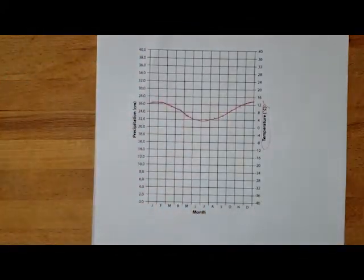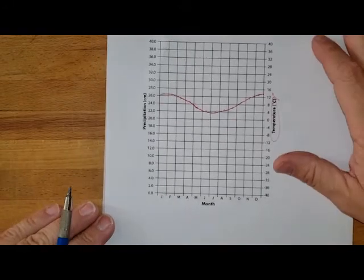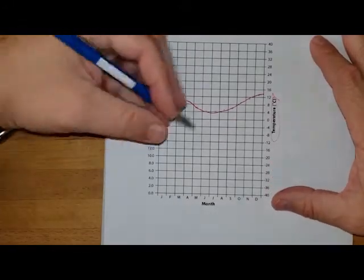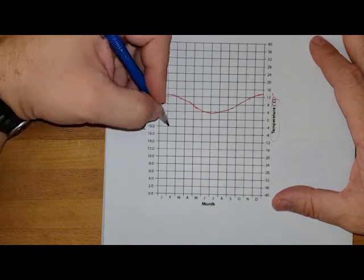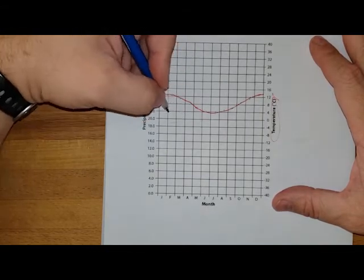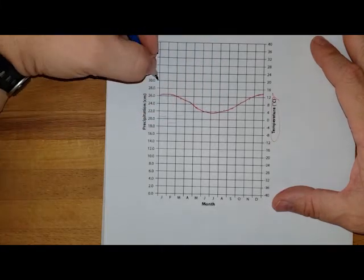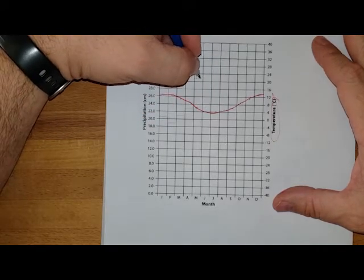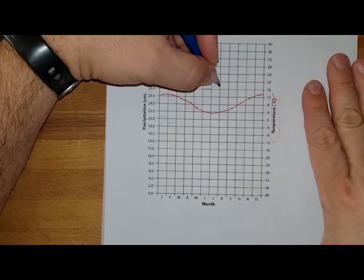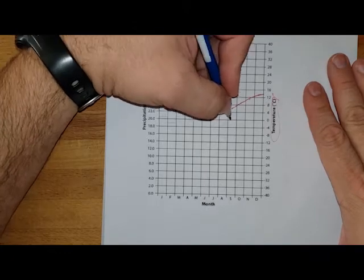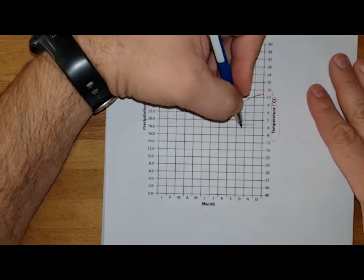And now I want to plot out my precipitation. For that I'm going to be doing a bar graph coming up from the bottom. So in January I've got 20.5, February 18.9, March 21, April 23, May 31, June 28, July 29, August 29, September down to 20, October 19, November 18.9, December 21.